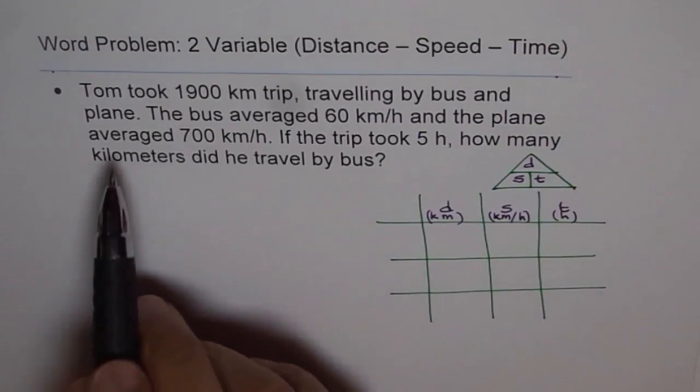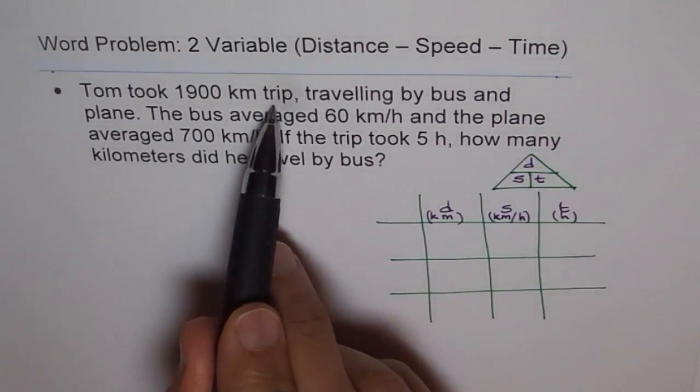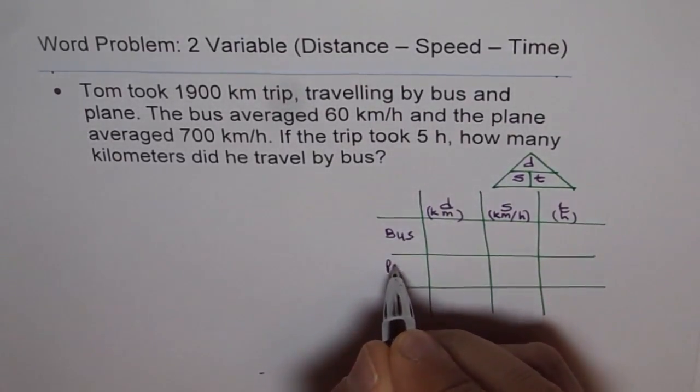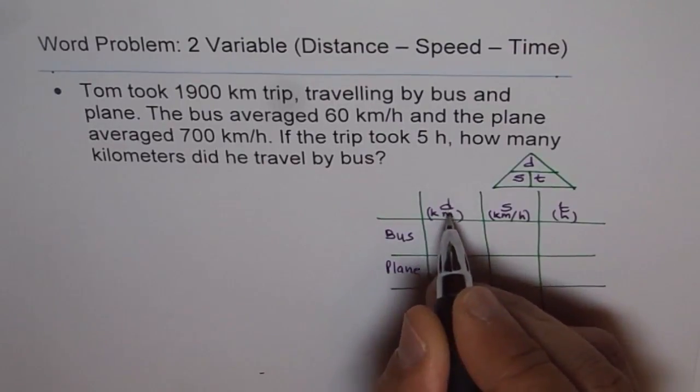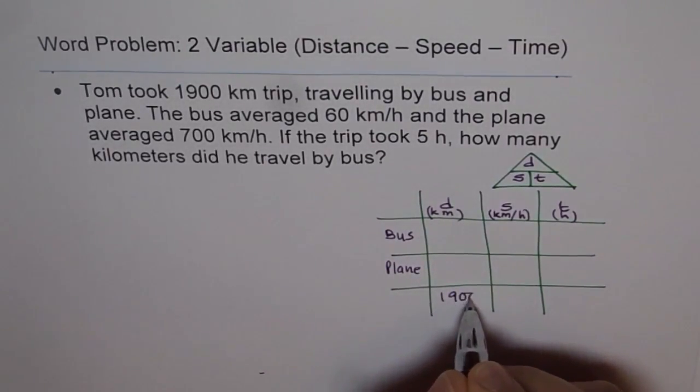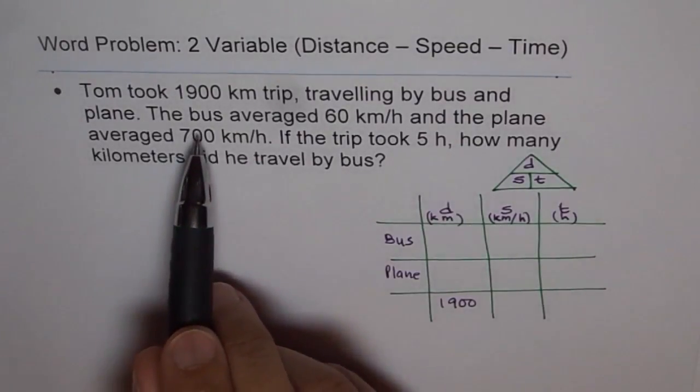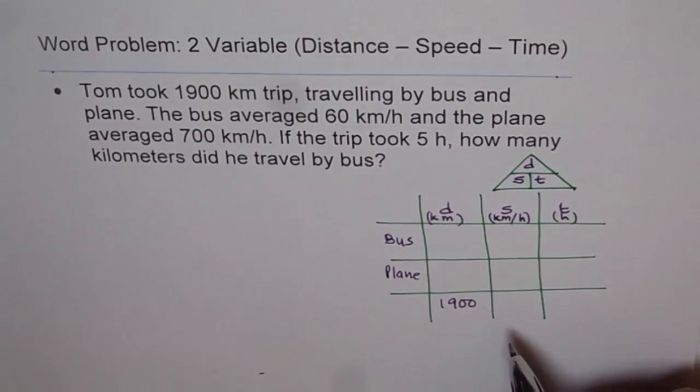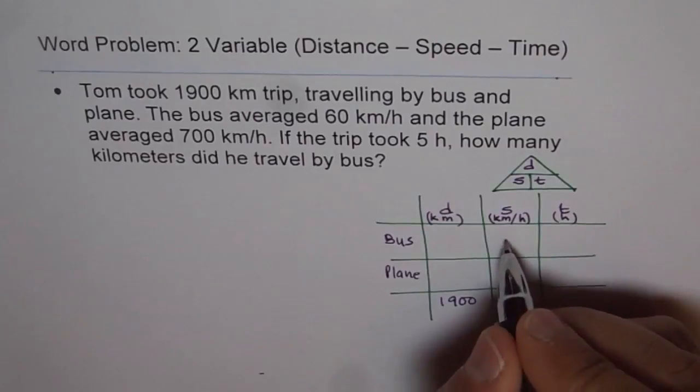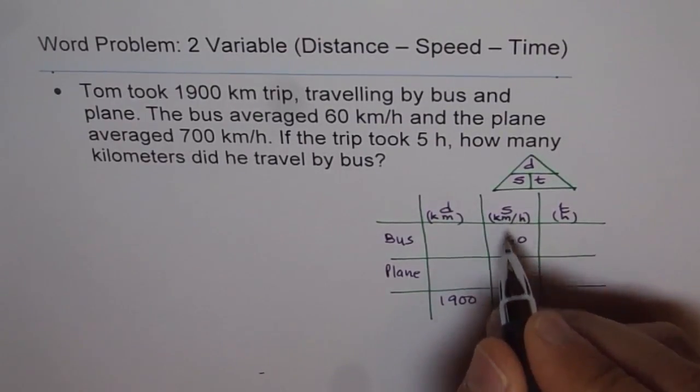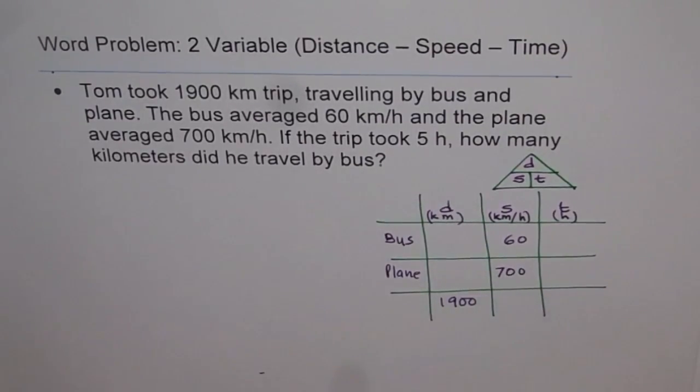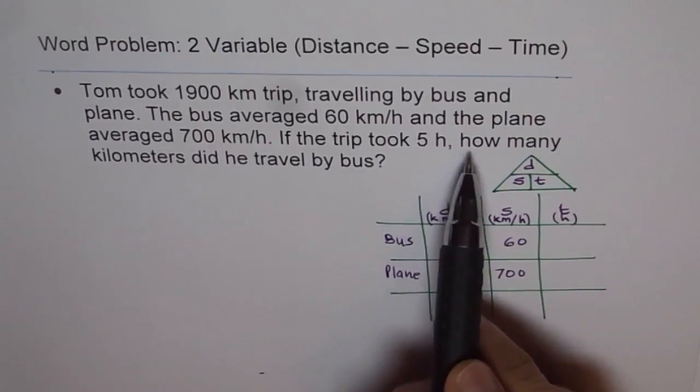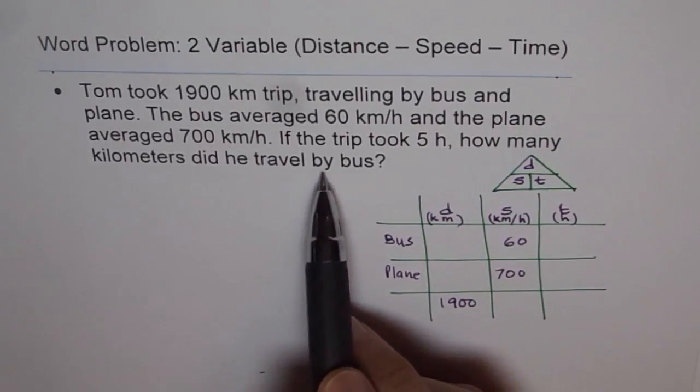Let us read the question once again. Tom took 1,900 kilometers trip, traveling by bus and plane. So we are traveling by bus and plane, and total distance covered is 1,900 kilometers. The bus averaged 60 kilometers per hour and the plane averaged 700 kilometers per hour. So that is the speed: 60 kilometers per hour for bus and 700 kilometers per hour for the plane.